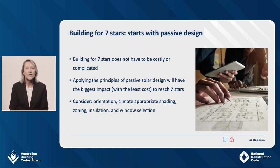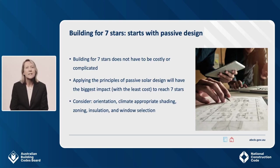Building for seven stars does not have to be costly or complicated. Simple design features and material choices can make a big difference to a home's energy efficiency and its energy rating. Correctly applying the principles of passive solar design will have the largest impact on a rating at the least cost to assist reaching the new seven star requirement. This includes building for the local climate and using sun control mechanisms to provide appropriate shade and solar access, for example to let in the winter sun and block out the summer sun. Correctly orientating the design so the main living areas have a northerly orientation will make a significant difference to a home's thermal performance and its star rating.